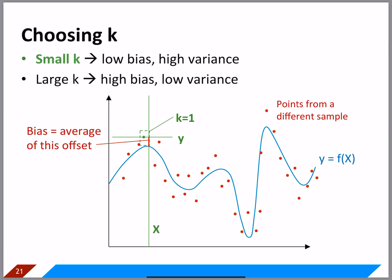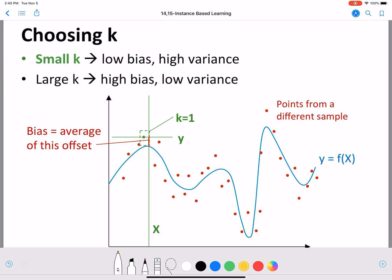Considering another data sample, we again calculate the bias as the distance between each data point and the curve. We can see there are many data points quite close to the curve. The points that are far away have their contribution minimized because there are many other data points which are closer. So the overall bias remains low for this second data sample as well.